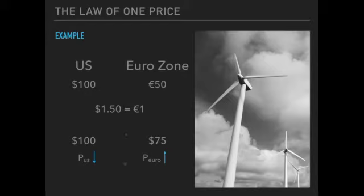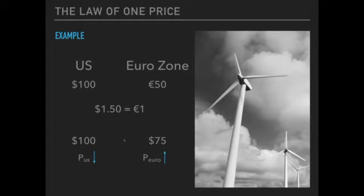This will continue to occur until the price differential disappears, because as long as there's a price differential — even if it's only $15 — individuals will purchase the item in the euro zone and sell it in the United States for a profit. This action of arbitrage will occur until the prices of the two products are equivalent to one another, and therefore the law of one price will hold.